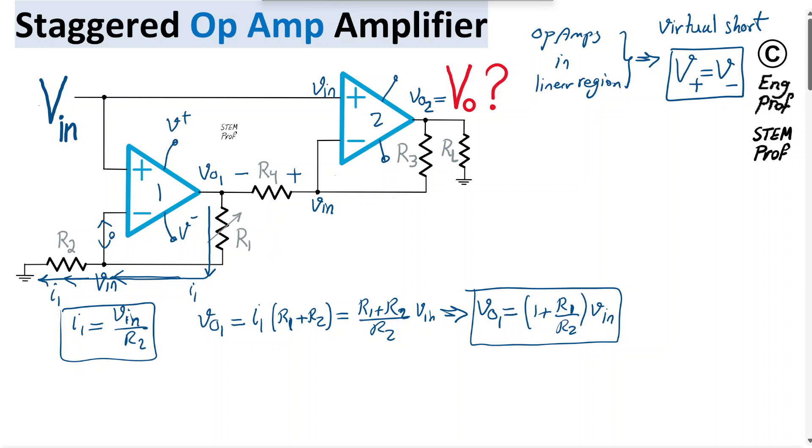Again, I'm going to write that this current I2 is easy to compute, is basically the voltage drop across R4, which is V-in on one side and then minus Vout 1 on the other side, divide by the value of resistor R4.